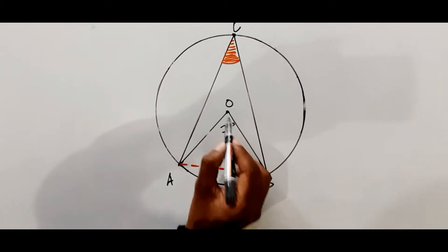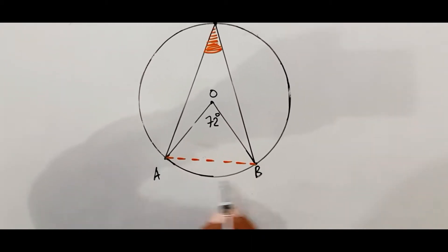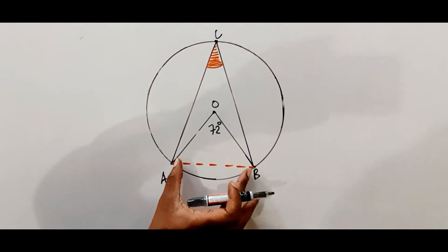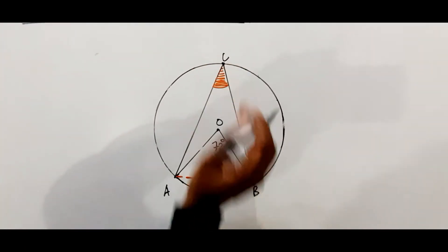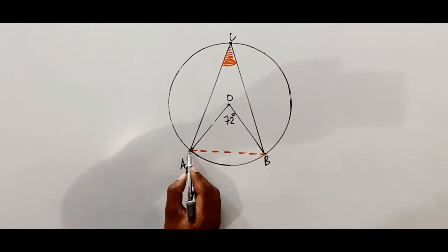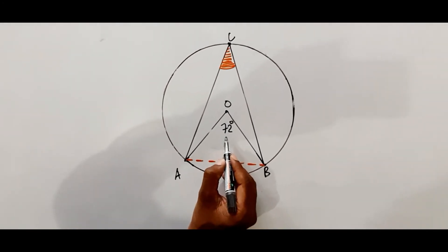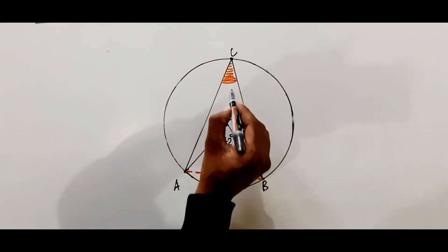This angle at the center, subtended by this very same arc or chord, is twice as much as the angle subtended on the circumference by the very same arc or chord. So this is double the size of that angle.